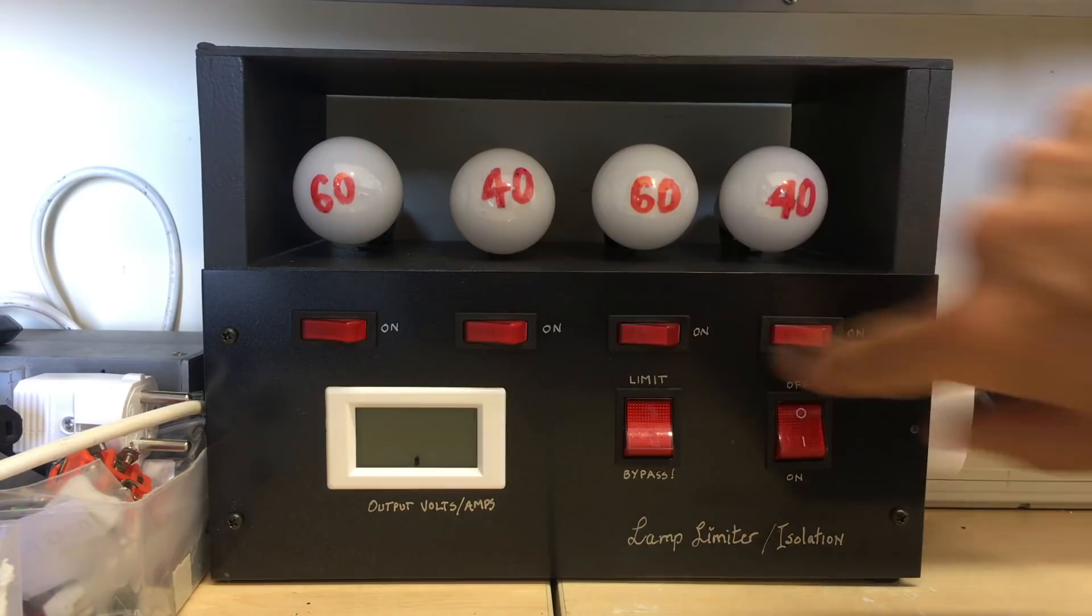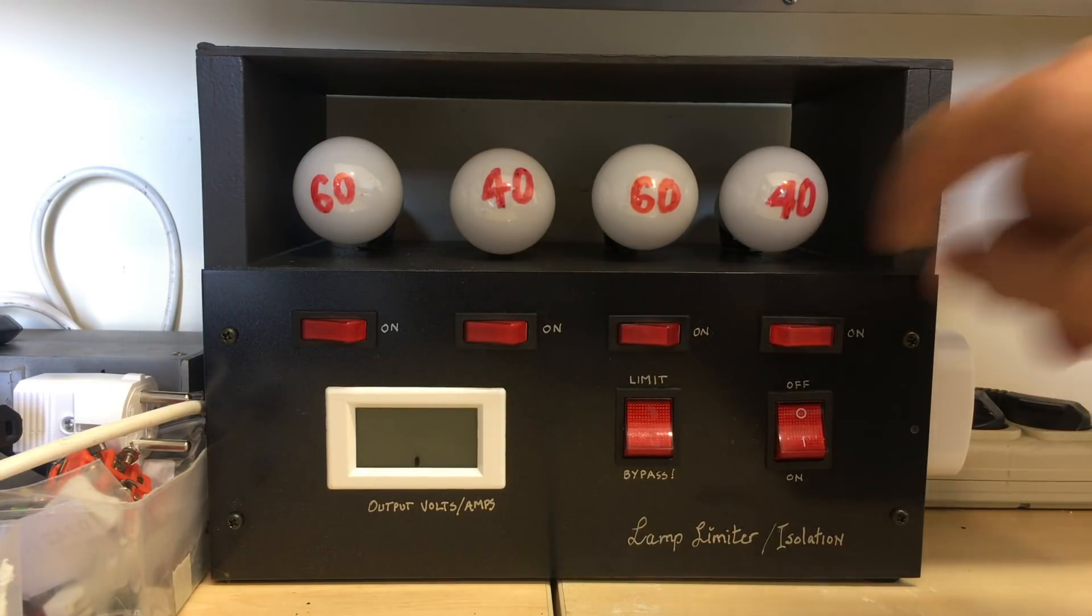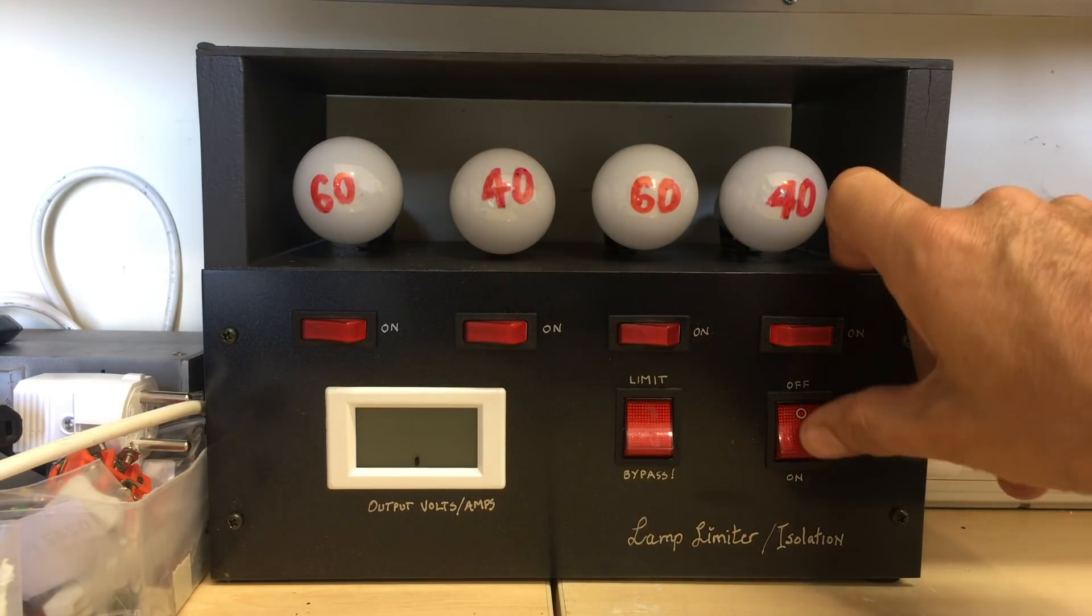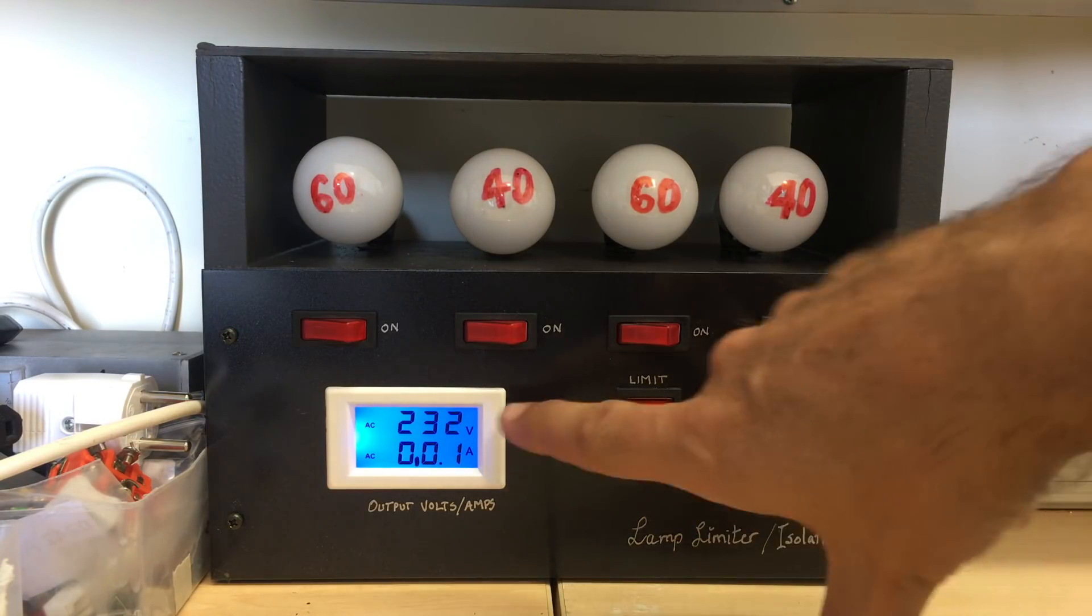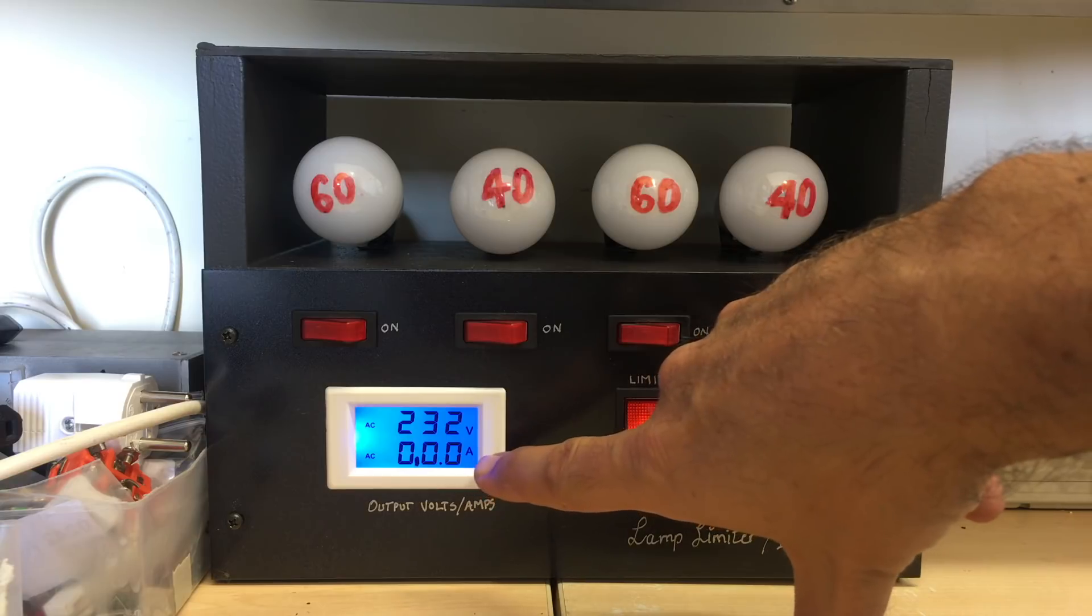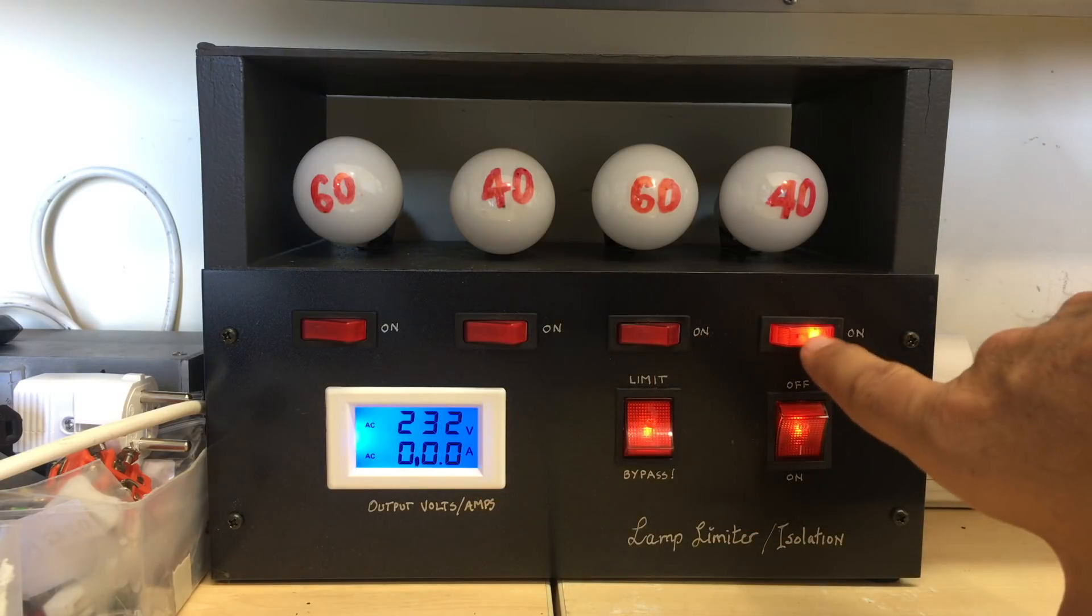Here we go. They're all off. I switch one on. I've got no load and I switch on the power. And as you can see we've got the full line voltage on there. Zero current. That lamp's on.